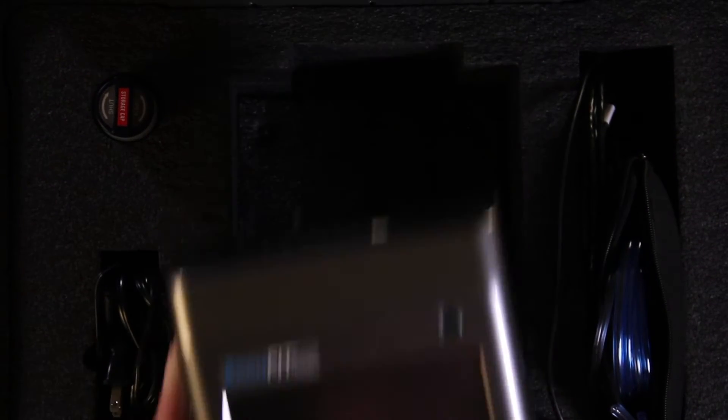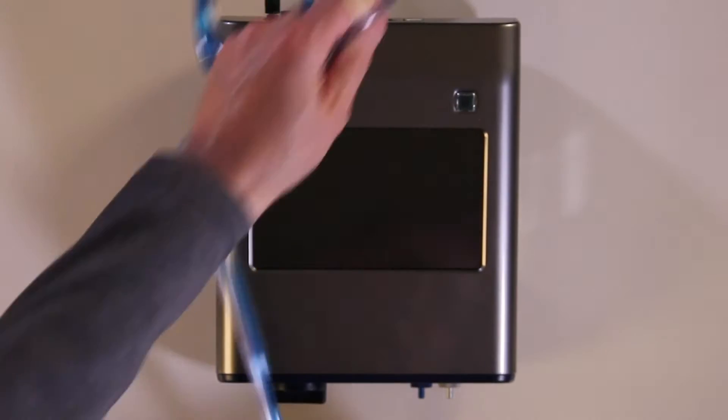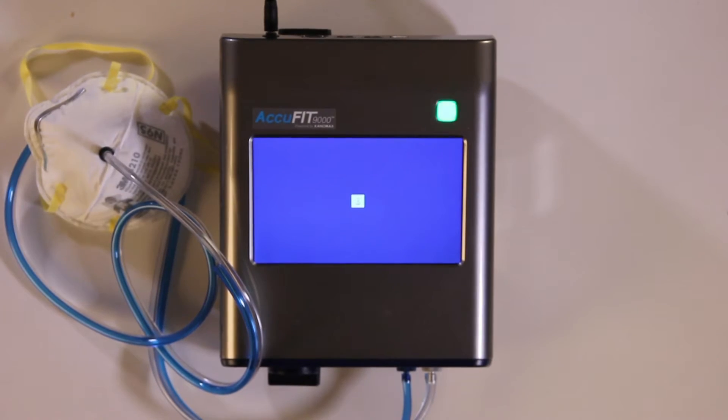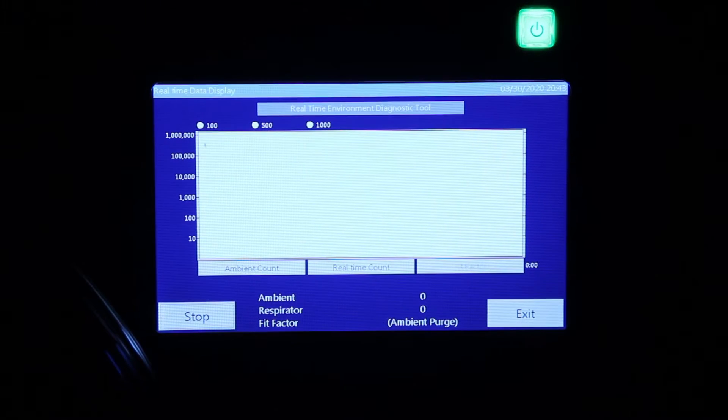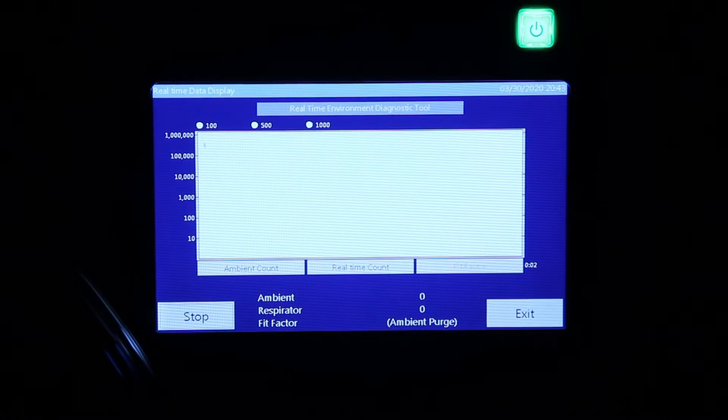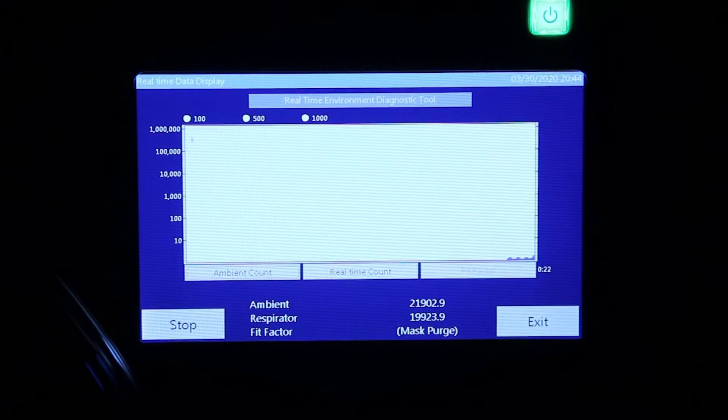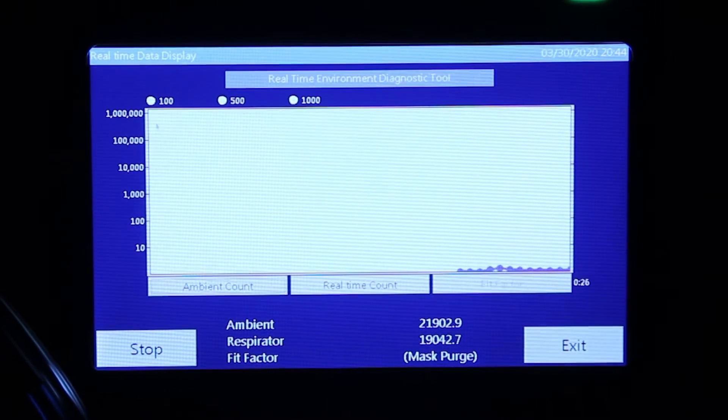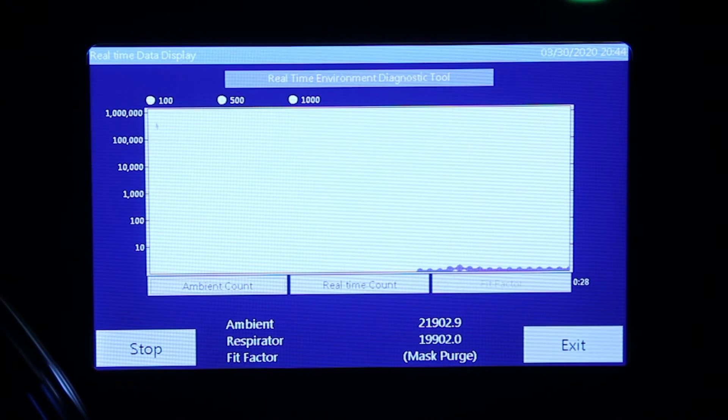Set up the AccuFit 9000 as you normally would to perform a fit test or a validation check. Then touch the Realtime icon. The AccuFit 9000 will provide a real-time count of the particulates in the immediate area and you can quickly determine whether or not you need to employ a particle generator.